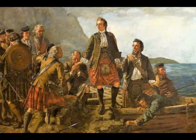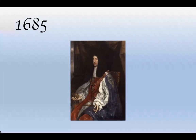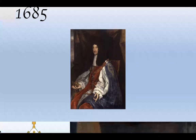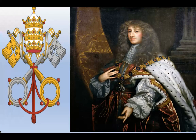Hello and welcome to the History Studio. In this episode we will look at the Jacobite edition — a Catholic king and the Glorious Revolution. In 1685, Charles II of England was succeeded by his Catholic brother James, who became King James II of England and VII of Scotland.